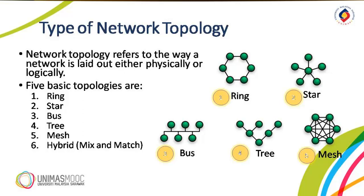The first one is the ring topology. In a ring topology, each device has a dedicated point-to-point configuration with only the two devices on either side of it. A signal is passed along the ring in one direction, from device to device, until it reaches its destination. A ring is easy to install and reconfigure. Each device is linked to only its immediate neighbors, either physically or logically.